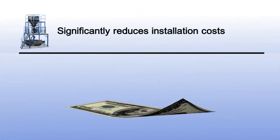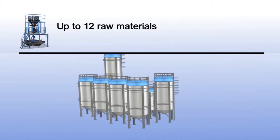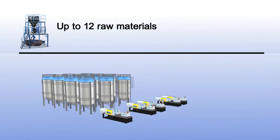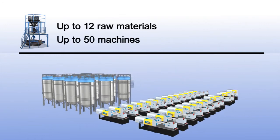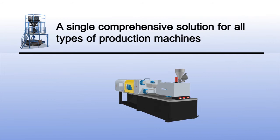PelletSave significantly reduces installation costs compared with similar dosing systems, allows for the use of up to 12 raw materials per formula and can feed up to 50 injection molding, extrusion or blow molding machines concurrently. Provides a single comprehensive solution for all types of production machines large and small.